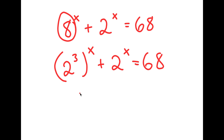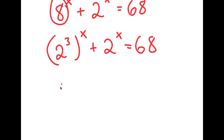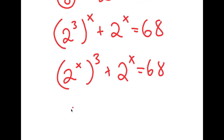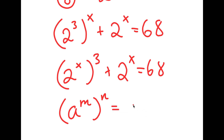I'm going to rewrite 2 to the power of 3 to the power of x as 2 to the power of x to the power of 3. I can do this because if I have something in the form a to the power of m to the power of n, this is equal to a to the power of n to the power of m.